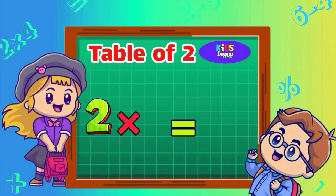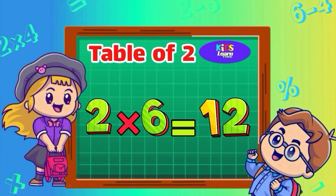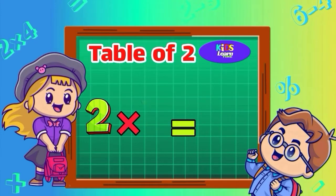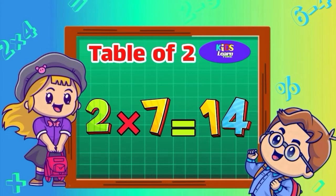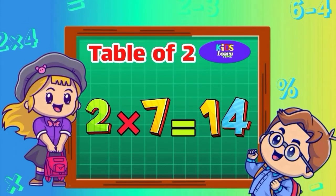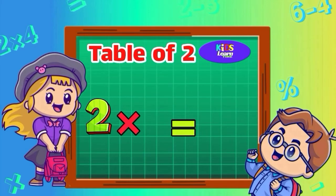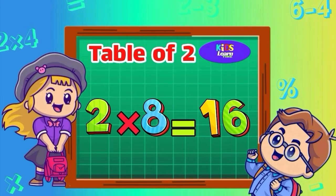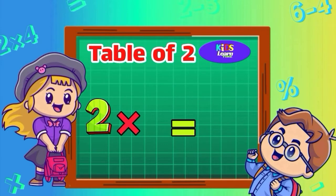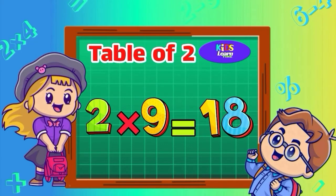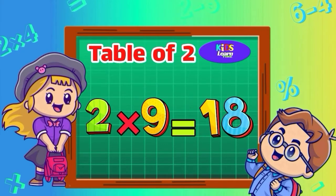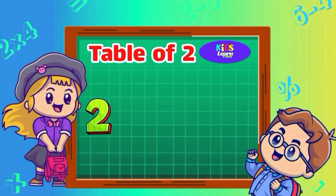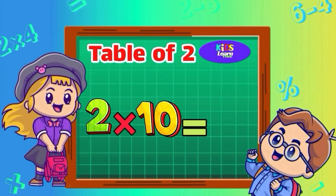Two six are twelve. Two sevens are fourteen. Two eights are sixteen. Two nines are eighteen. Two tens are twenty.